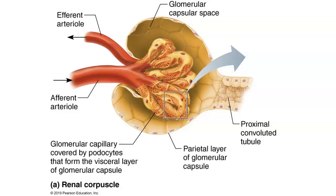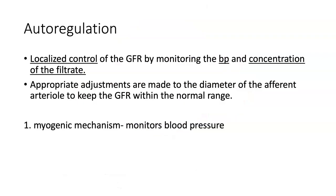There are two main ways that we regulate the glomerular filtration rate. One is a localized control called autoregulation, and the other way is through hormones. Let's take a look at autoregulation first.